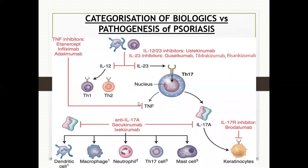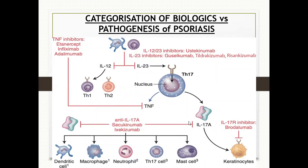Since TH1 cells secrete TNF-α, etanercept, infliximab, and adalimumab would block this action. The other cytokine secreted by the antigen-presenting cell is interleukin-23, which results in activation and proliferation of TH17 cells. This IL-23 step is inhibited by IL-12 and IL-23 inhibitors like ustekinumab. Once TH17 cells enter the epidermis, they secrete interleukin-17A, which is blocked by IL-17 inhibitors. This is where these biologics are acting in psoriasis.